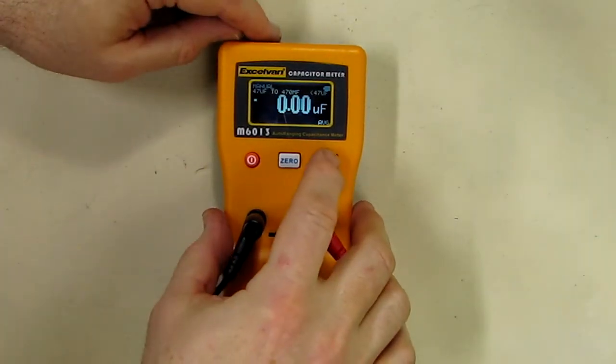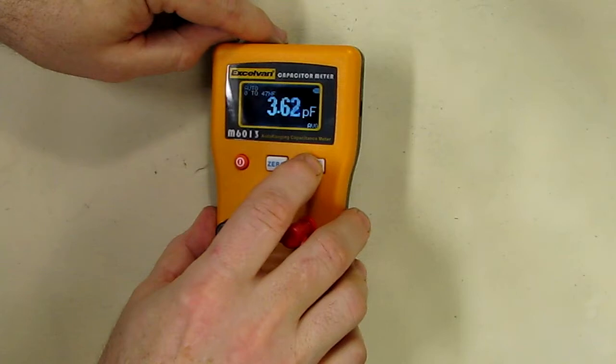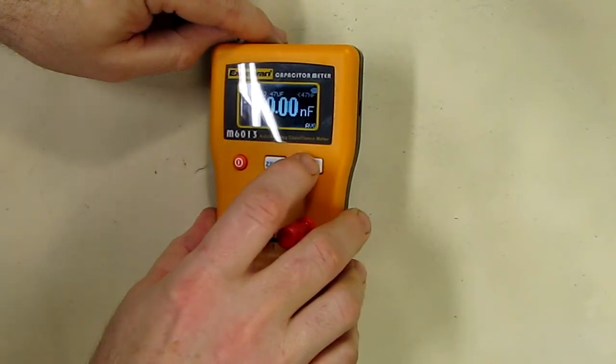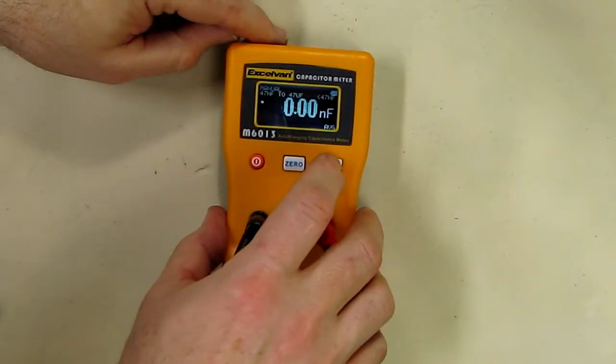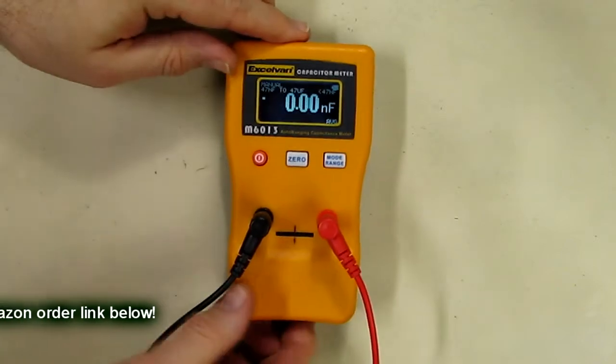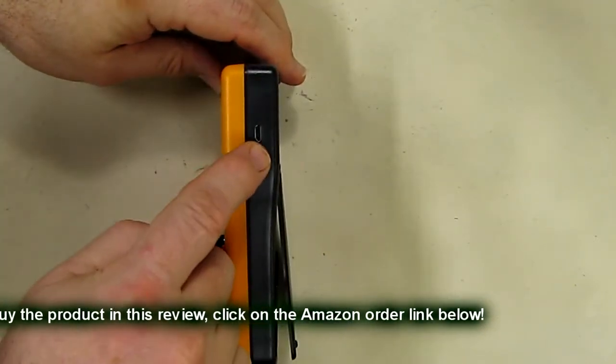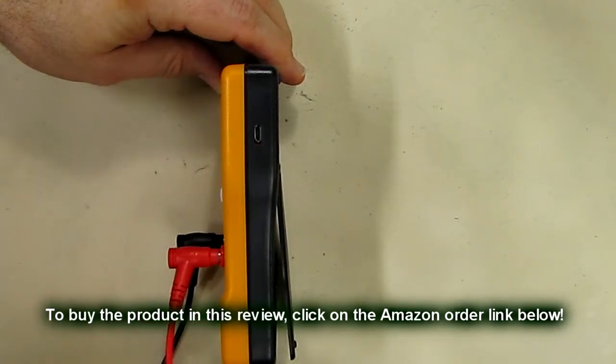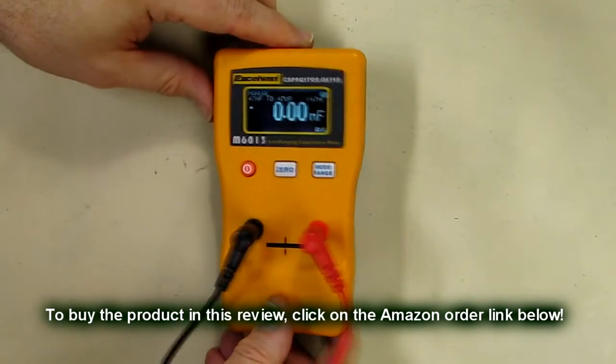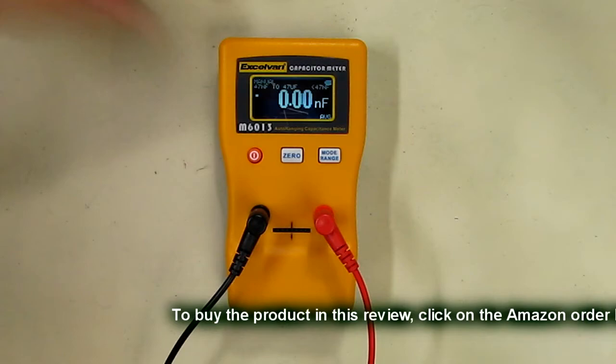There's another feature where you have a mode that can control the range because it has two different ranges depending on the capacitor. You also have on the side here a little micro USB port that will power the device if you don't have a battery, so that's a nice added feature.